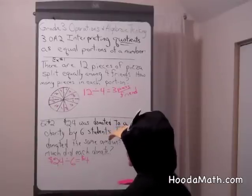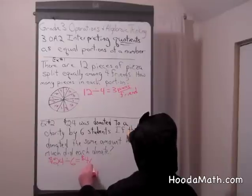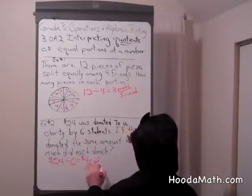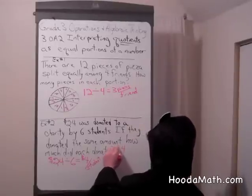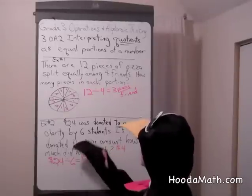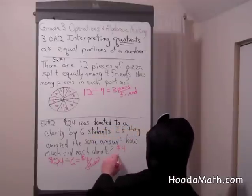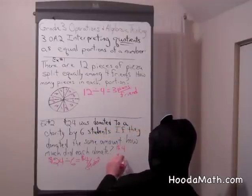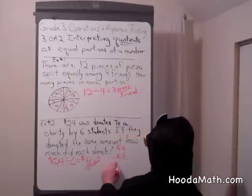Now how do we know this is true? We can prove it by saying, well, if one student donated $4, how many did 6 students donate? And we can check our answer by multiplying 6 students times the $4 and get $24.